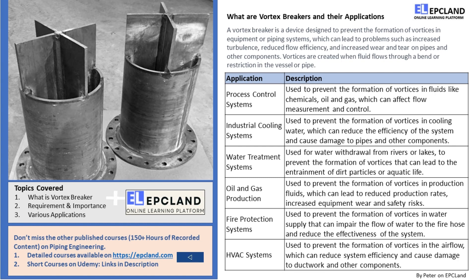Vortex breakers are commonly used in industrial cooling systems, process control systems, oil and gas production, and water treatment systems. By preventing the formation of vortices, they ensure that these systems operate smoothly and efficiently. They are simple yet effective devices that can help prevent the formation of vortices in equipment or piping systems, improving system efficiency and reducing wear and tear on components.